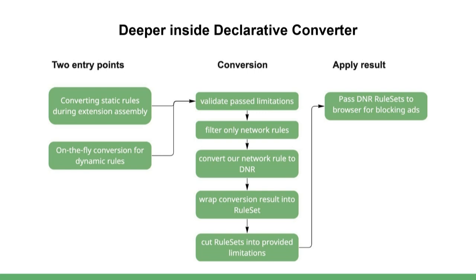Let's take a closer look at how our declarative converter works in detail. As I mentioned earlier, we have two entry points: converting static rules before extension assembly, and on-the-fly conversion for dynamic rules. The conversion library works as follows: first, there is a validation check for the specified limits; then, we filter out only network rules from the provided filters; we convert each of the rules individually into DNR syntax; then we package the obtained set of rules into a rule set and a separate metadata file. If the limits were exceeded, we trim the rule set to the required constraints and return it to the client code, which then passes these rule sets to the browser for ad blocking.